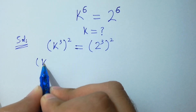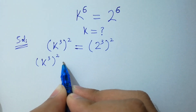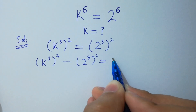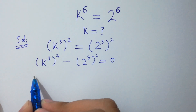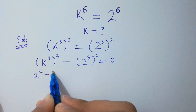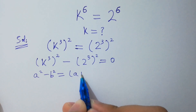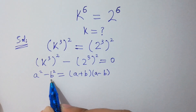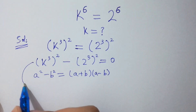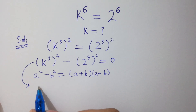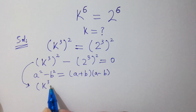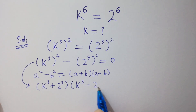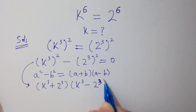So k to the power 3, to the whole power 2, minus 2 to the power 3, to the whole power 2 equals 0. We know that a squared minus b squared equals (a + b)(a − b). Here a equals k cubed and b equals 2 cubed, so this equation changes into (k cubed plus 2 cubed)(k cubed minus 2 cubed) equals 0.